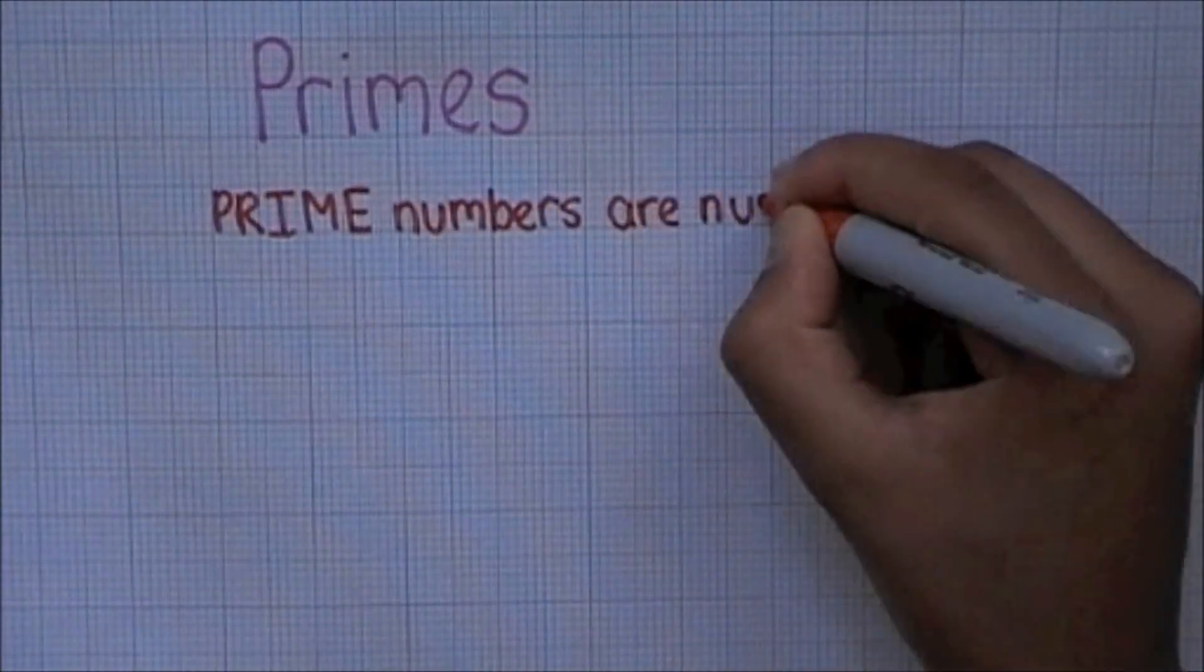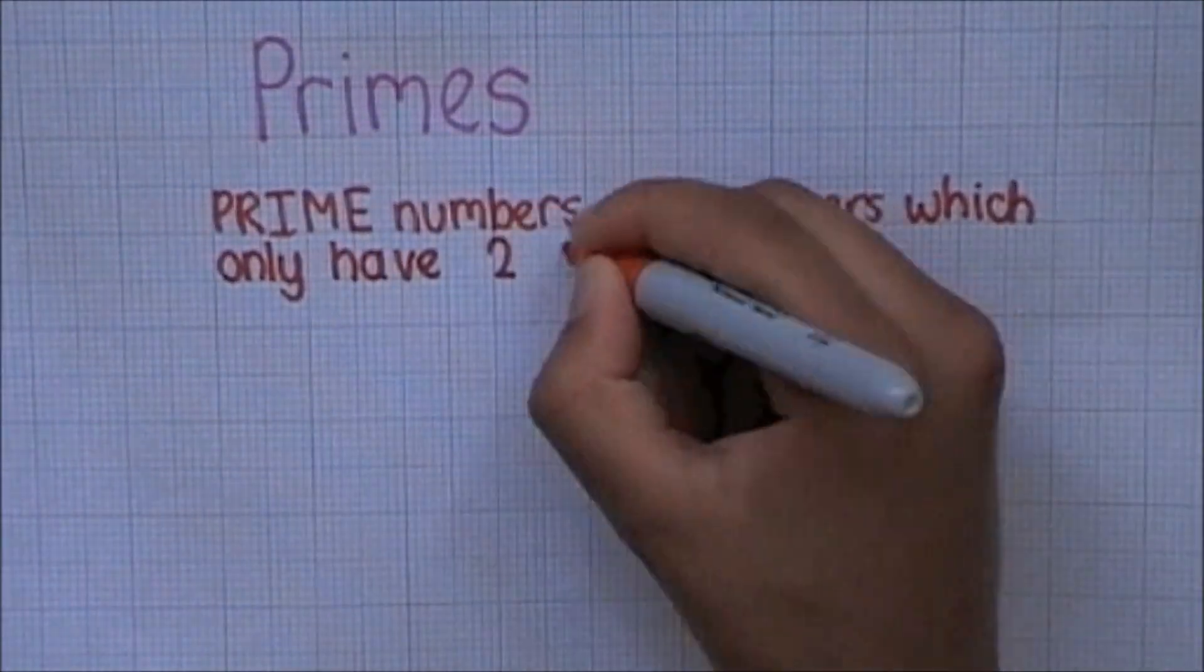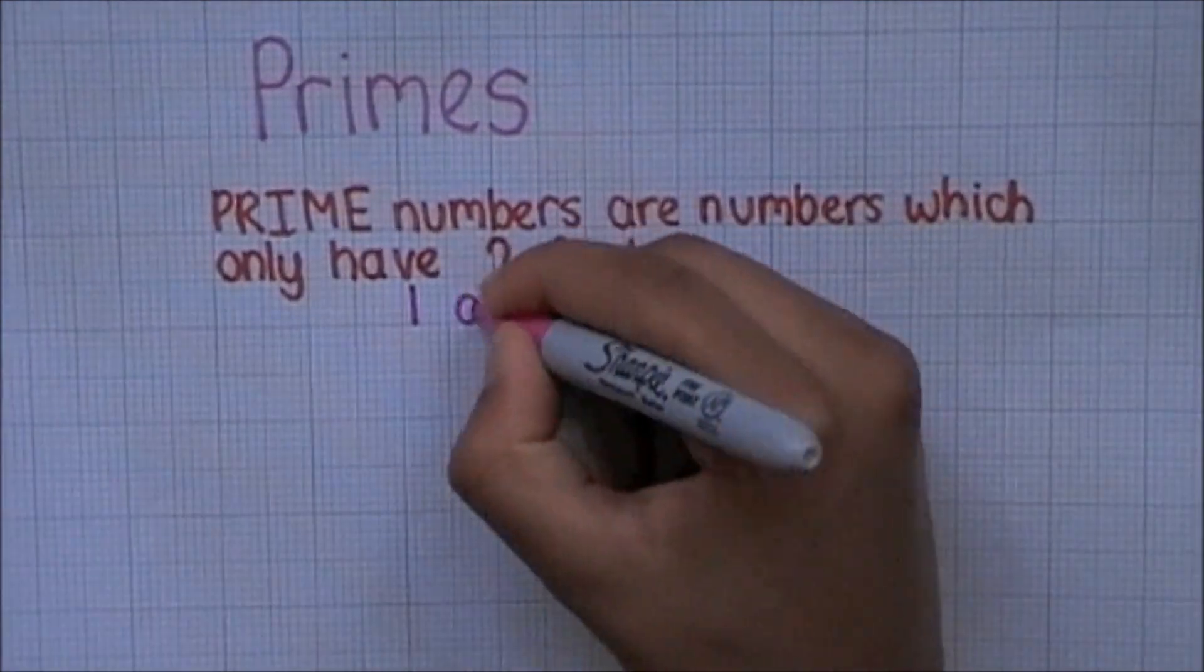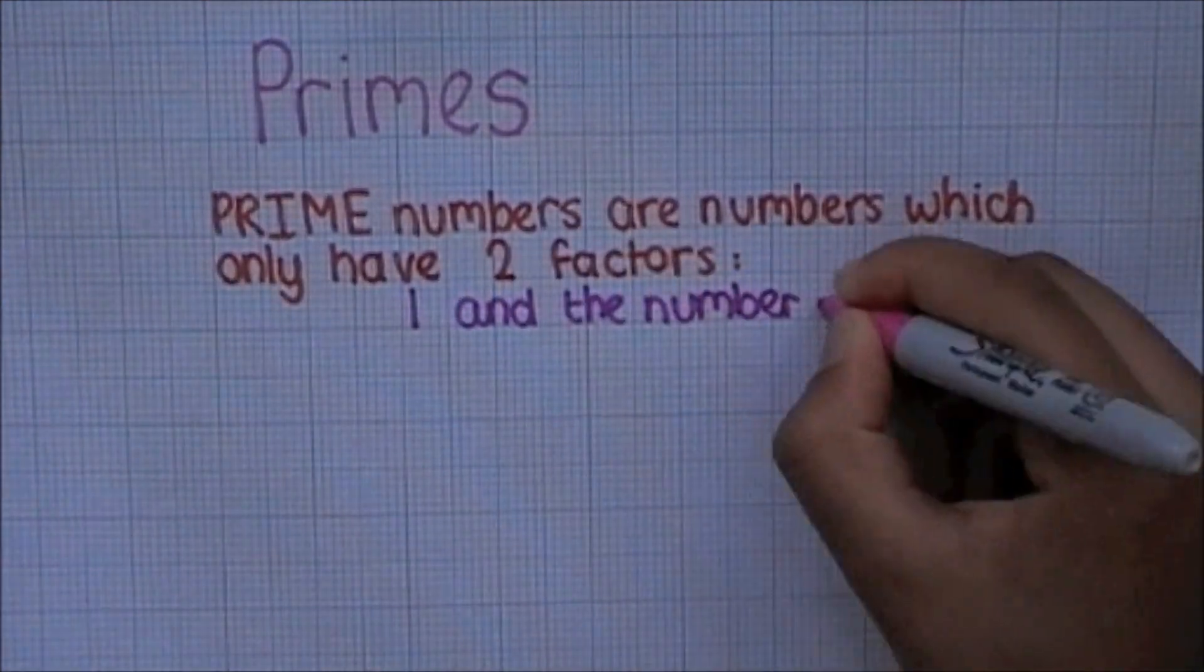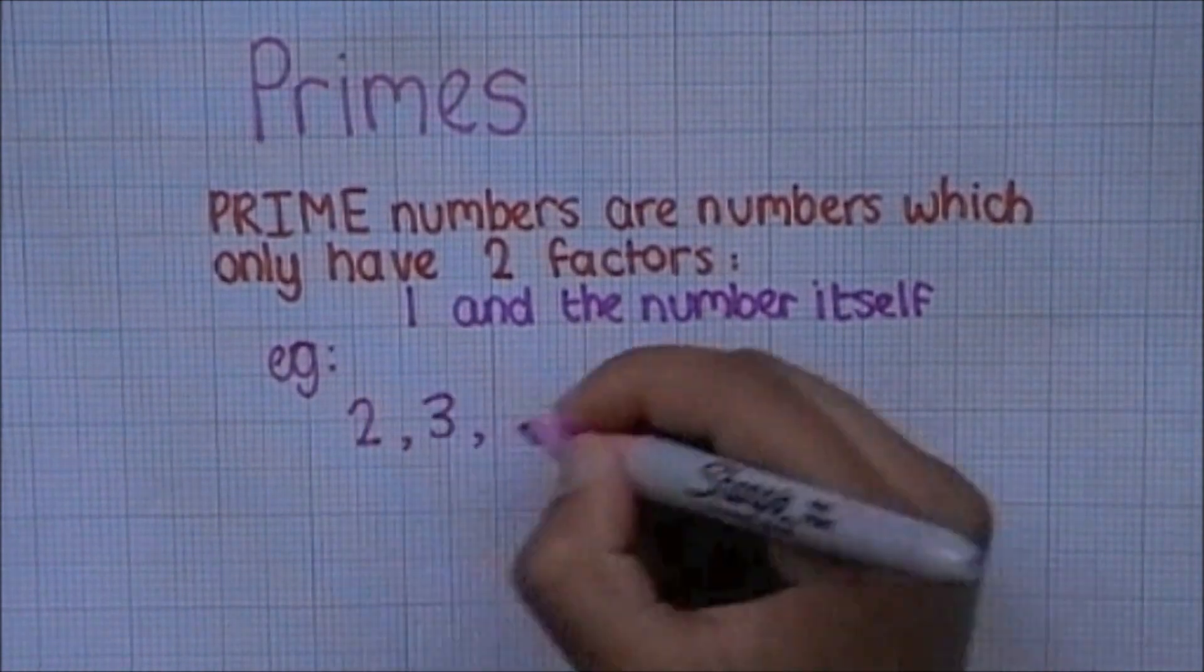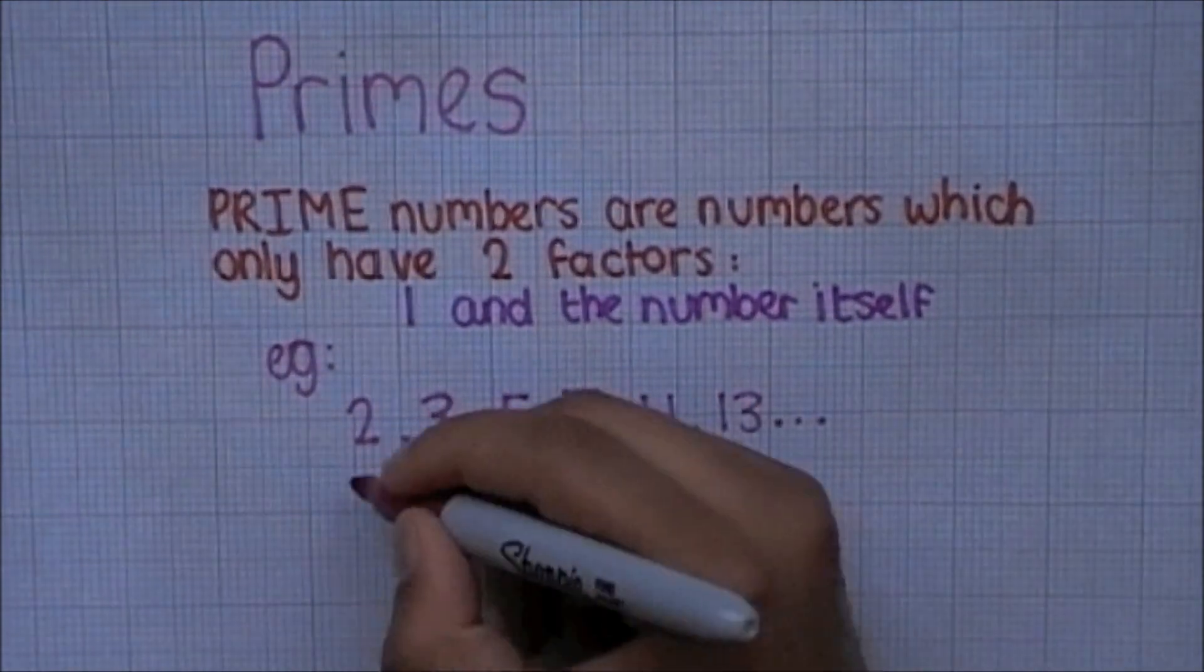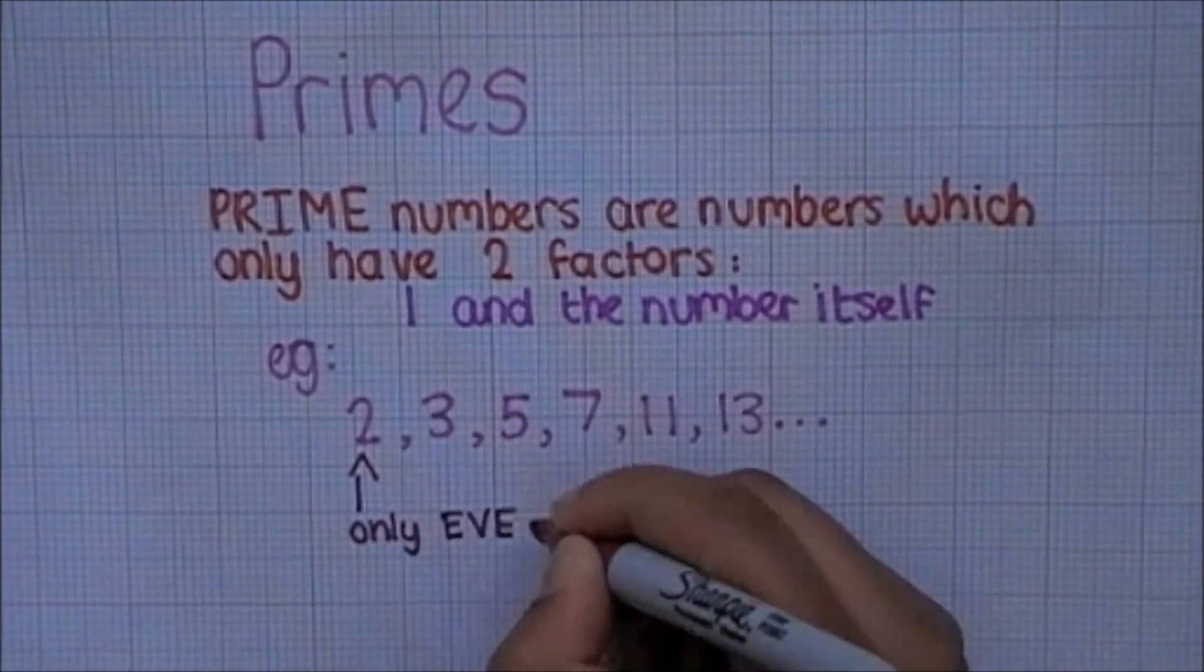Primes. Prime numbers are the numbers which have only 2 factors. These factors are 1 and the number itself. Some examples of prime numbers are 2, 3, 5, 7, 11 and 13. Note that 2 is the only even prime number.